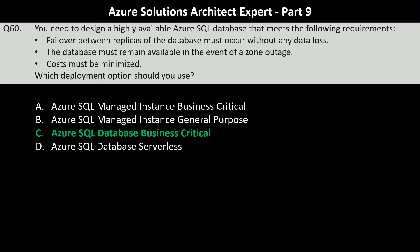Azure SQL Database Business Critical tier offers high availability using Always On availability groups, ensuring that failover between replicas can occur without any data loss. It provides zone redundancy, allowing the database to remain available even in the event of a zone outage. Although it has a higher cost than some other tiers, it provides the necessary features for the given requirements.